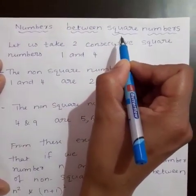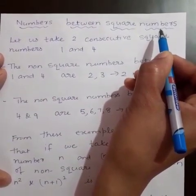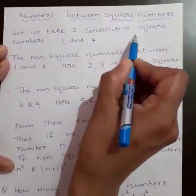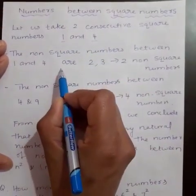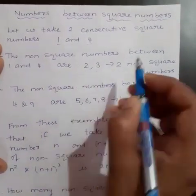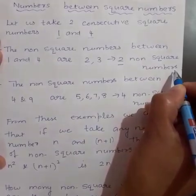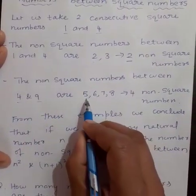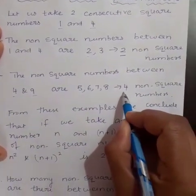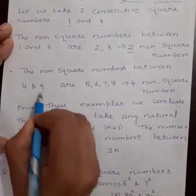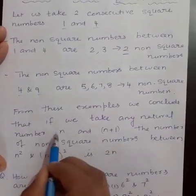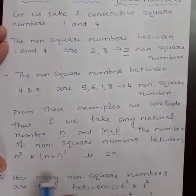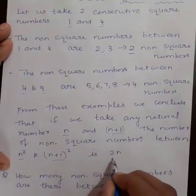Next, numbers between square numbers. How to find non-square numbers between two consecutive square numbers? Let us take two consecutive square numbers, 1 and 4. The non-square numbers between 1 and 4 are 2 and 3, so total two non-square numbers are there. The non-square numbers between 4 and 9 are 5, 6, 7, 8 — so we got four non-square numbers between 4 and 9. From these examples, we conclude that if we take any natural number n and n plus 1, the number of non-square numbers between n square and (n+1) whole square is equal to 2 into n.